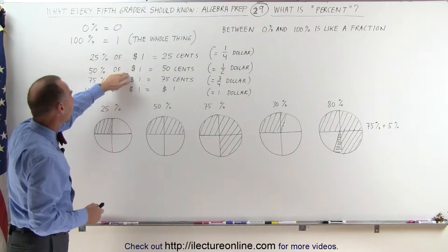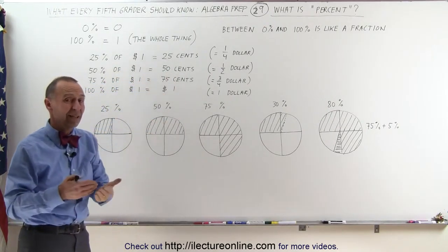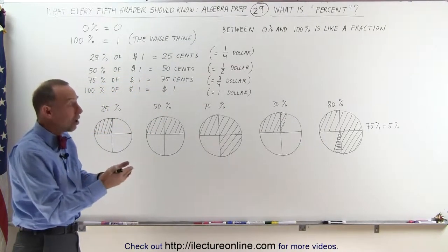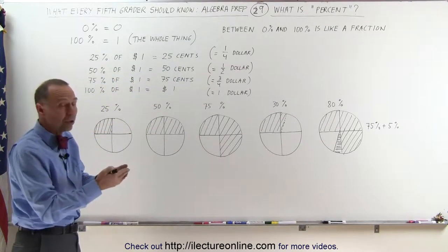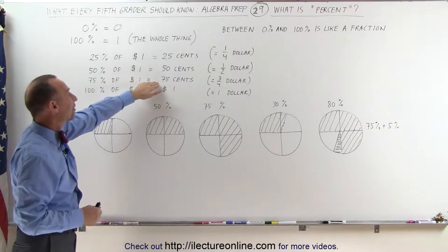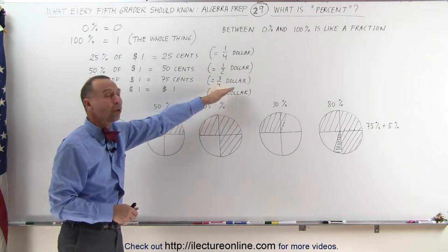50% of a dollar means that we have 50 cents, which means that 50 cents of a dollar. That's 50% of a whole dollar. 75% of a dollar means that we have 75 cents, which means we have 3 quarters of a dollar.